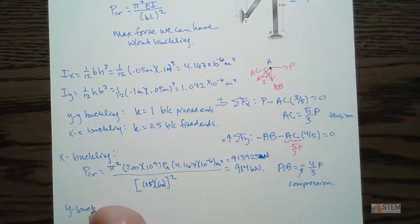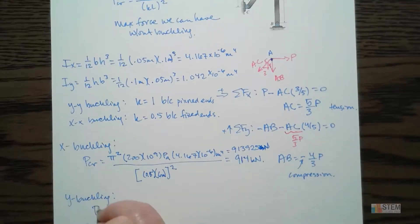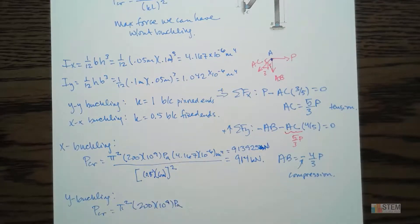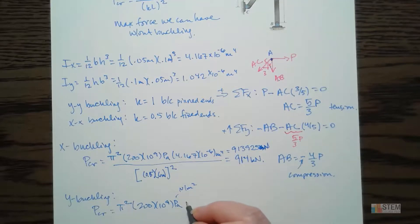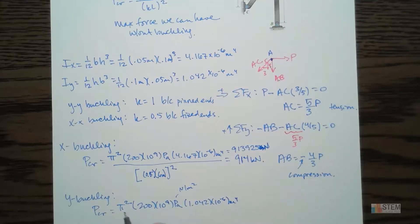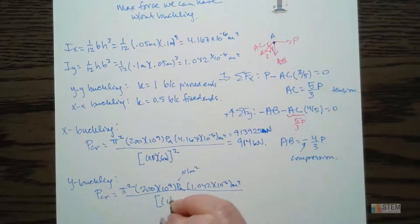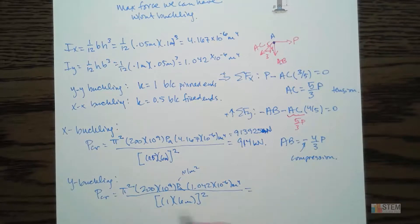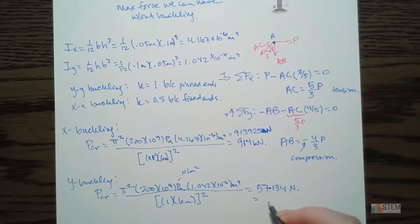Now for Y-axis buckling: π²(200 × 10⁹)(1.042 × 10⁻⁶) divided by (1 × 6)² — K is 1 for pinned ends and L is 6 meters. When you simplify this, you get 57,134 newtons, or 57.13 kilonewtons.